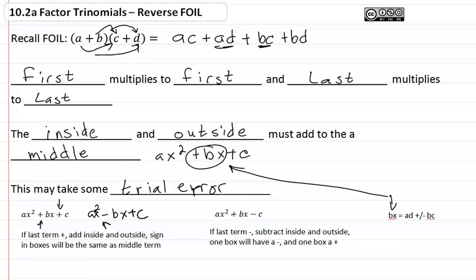For ax² + bx - c, if that last term is negative, we're going to subtract the inside and outside. One box will have a positive and one box will have a negative based on where we need it and whether this is plus or minus.